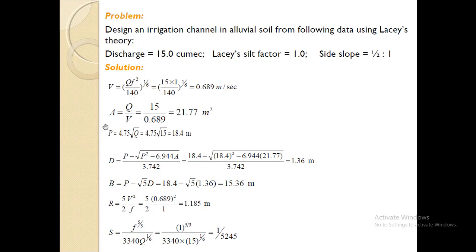The wetted perimeter is 18.4 meters. Flow depth is calculated from Lacey's formula — after putting in the values, the flow depth is 1.36 meters. The width of the channel is calculated from the formula and comes out to 15.36 meters. The hydraulic radius is calculated from the formula and is 1.18 meters. Finally, after substituting all these values into Lacey's bed slope formula, the bed slope is 1 in 5245.